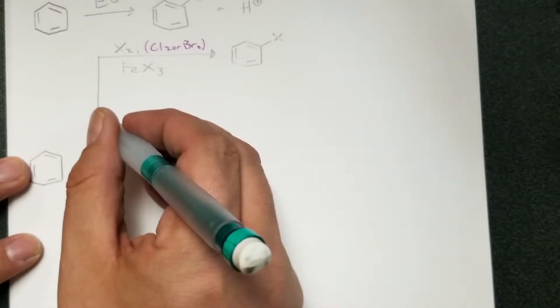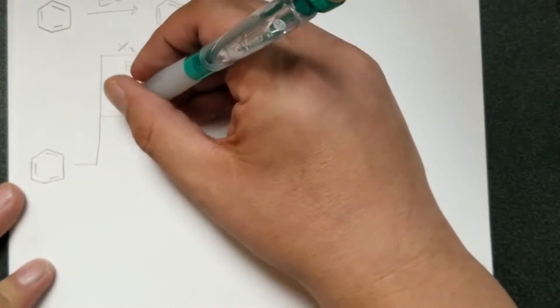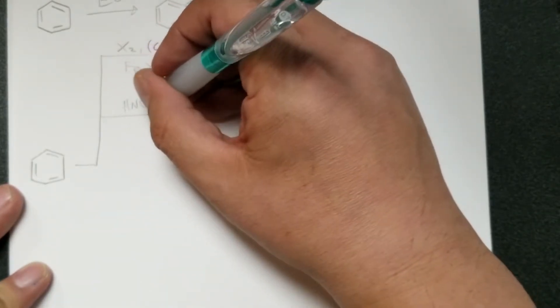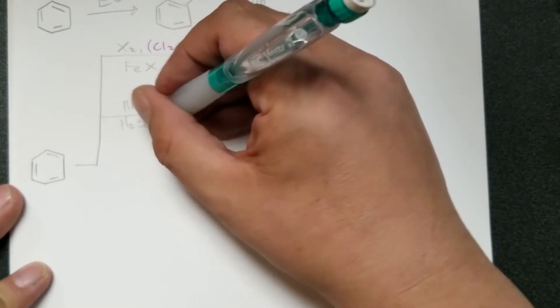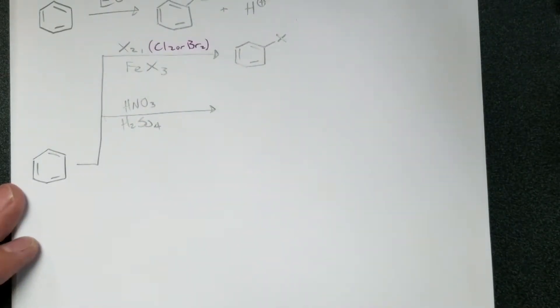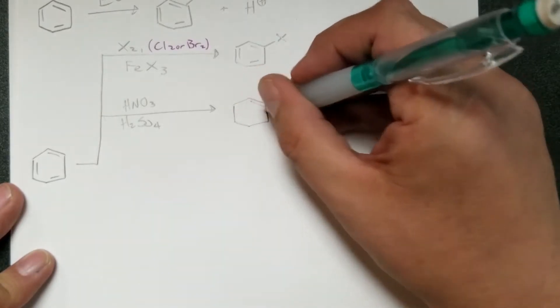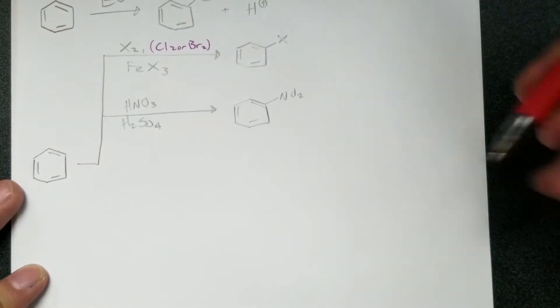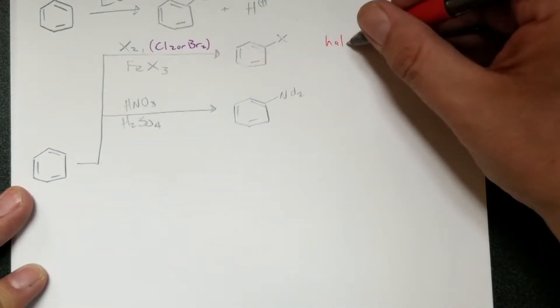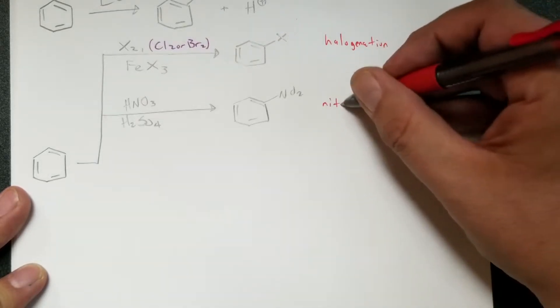The one that we're doing in lab this semester, pretty nasty reaction but it's fun to do regardless, is nitration. This is done with HNO3 and H2SO4. They are both concentrated, and this is nitration. You're going to put a nitro group on there. So just labeling things here. This first one here is halogenation. Next one here is nitration.